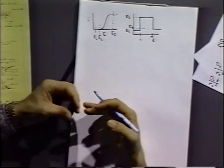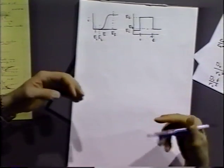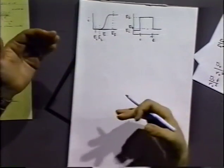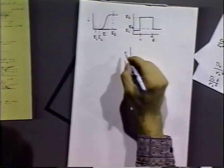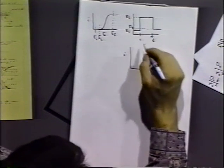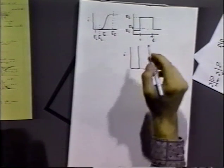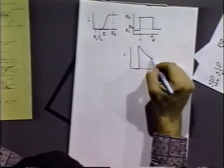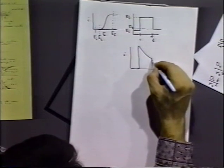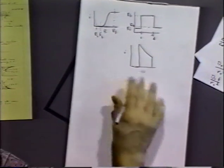We actually get quite a bit of information out of the system, because now what we're going to do on the potential step back is interrogate the concentration profiles that we've developed on the step forward. The idea is that if we look at the current that flows — we'd expect to see a large spike of current and then a t to the minus one-half decay. Then as we step back, let's look at the concentration profiles to answer what's going to happen.